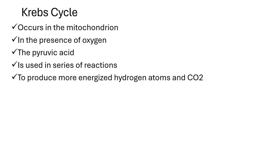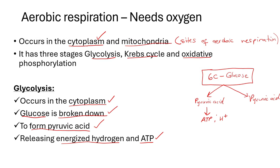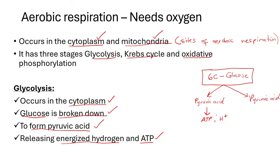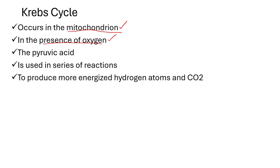Now let us move to the next step, the Krebs cycle. The Krebs cycle occurs in the mitochondrion. In aerobic respiration, glycolysis occurs mainly in the cytoplasm, and then the Krebs cycle and oxidative phosphorylation take place in the mitochondria of the cell. The Krebs cycle occurs in the presence of oxygen. For glycolysis, oxygen is not really needed — although we are explaining aerobic respiration, glycolysis does not need oxygen. It occurs in the cytoplasm but does not require oxygen. The Krebs cycle, however, requires oxygen.